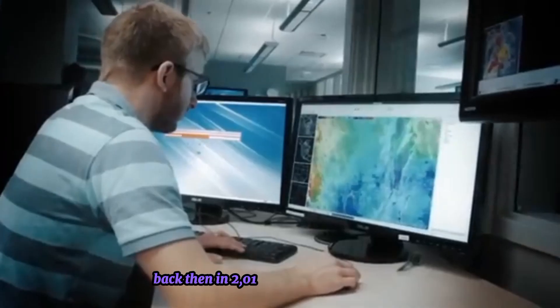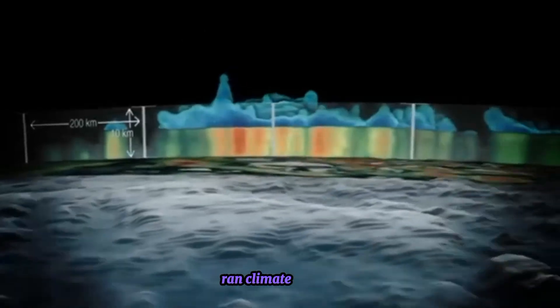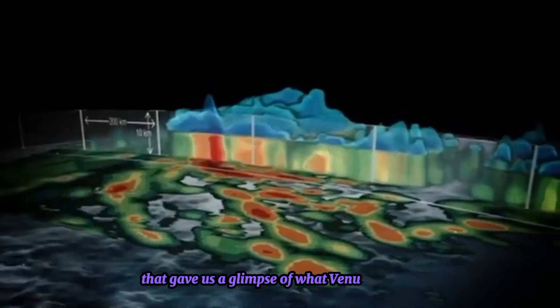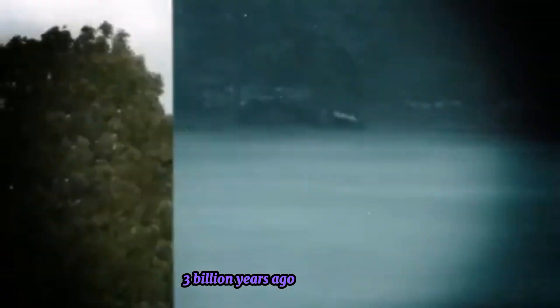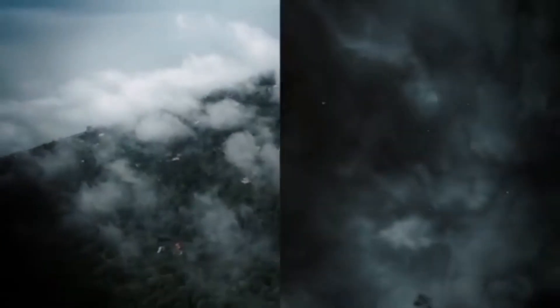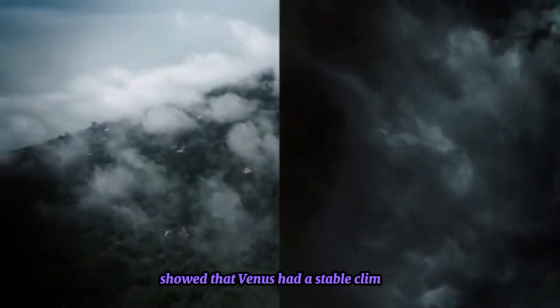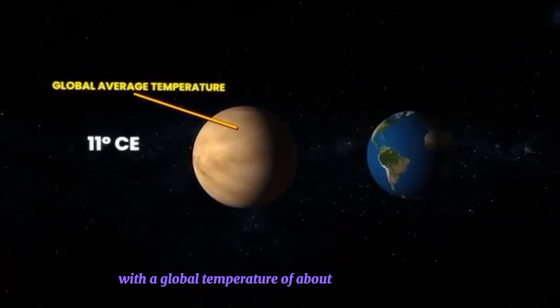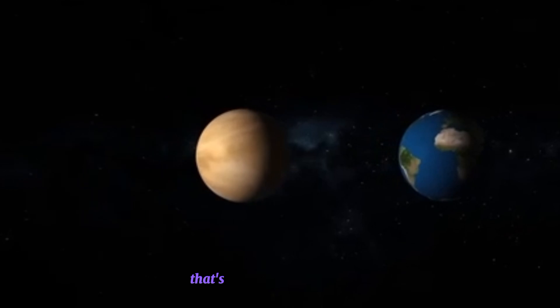In 2016, researchers from NASA ran climate models that gave us a glimpse of what Venus was like 3 billion years ago. These models, which used data to predict conditions on other planets, showed that Venus had a stable climate, with a global temperature of about 11 degrees Celsius. That's cooler than Earth today.